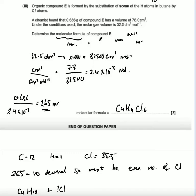Organic compound E is formed by the substitution of some of the hydrogen atoms in butane by chlorine atoms. A chemist found that 0.636 grams of compound E has a volume of 76 centimetres cubed. Under the conditions used, the molar gas volume is 32.5 centimetres cubed per mole. Determine the molecular formula of compound E. So in order to determine the molecular formula, we need to have the MR. And MR is mass over moles gives us MR.